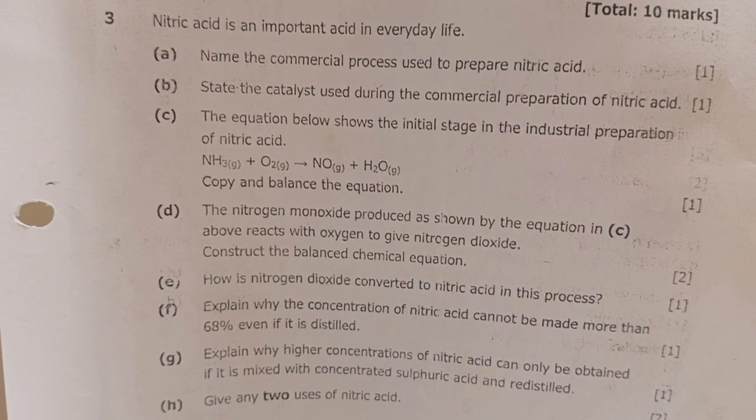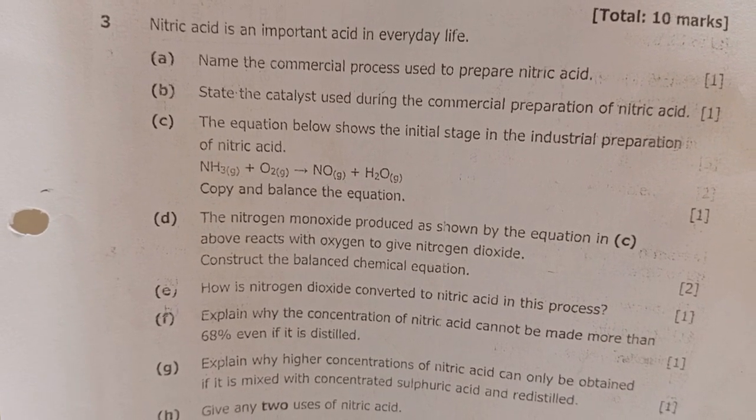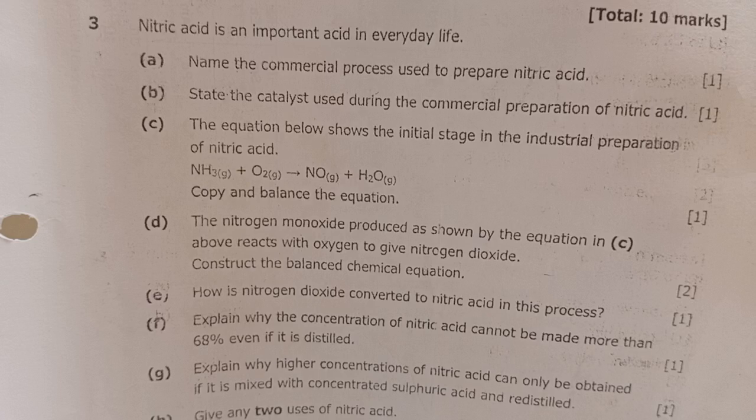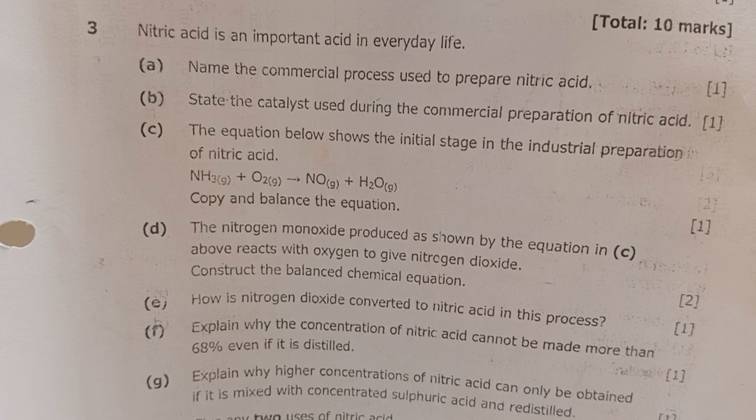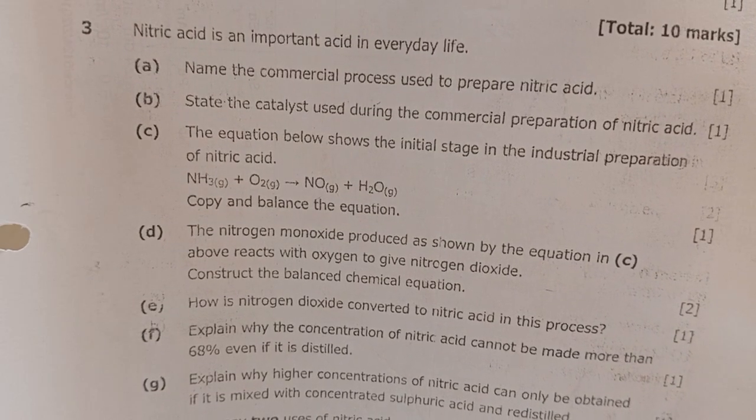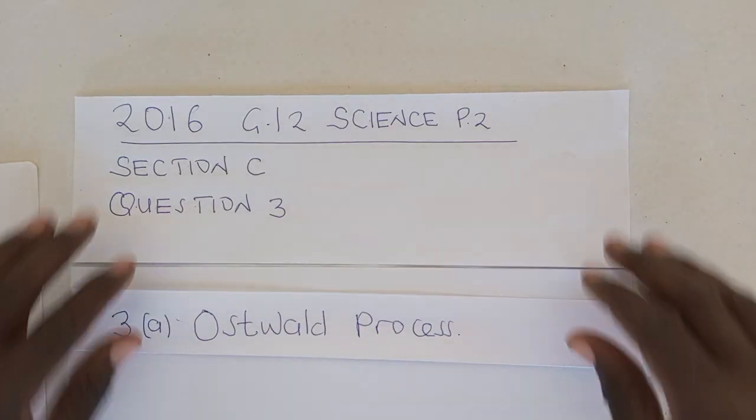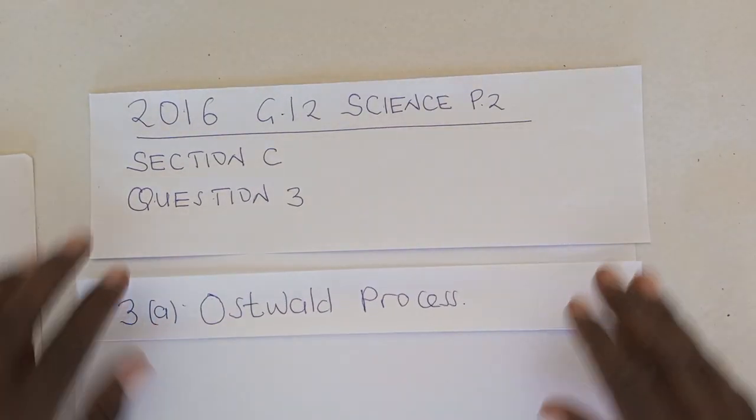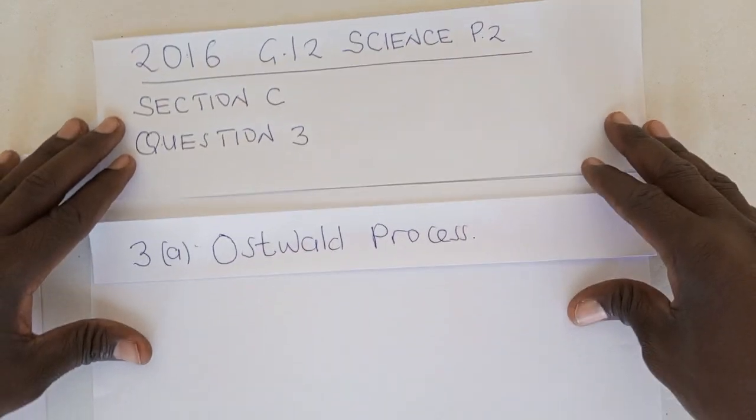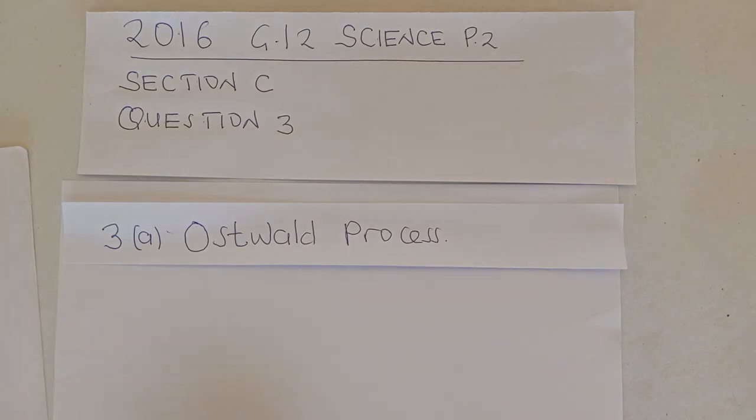Here is the question. The first question, which is question 3A, says nitric acid is an important acid in everyday life. Question A: name the commercial process used in the preparation of nitric acid. And when we look at that from my previous video, you will discover that the process by which nitric acid is prepared or commercially manufactured is the Ostwald process. So this is the answer: Ostwald process.